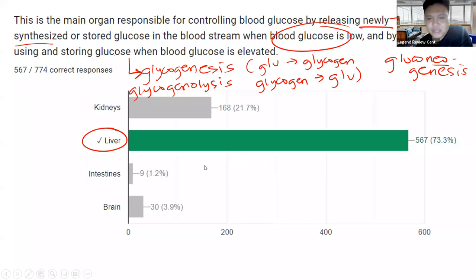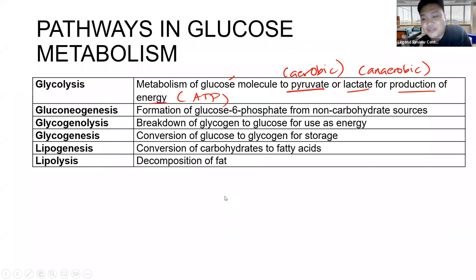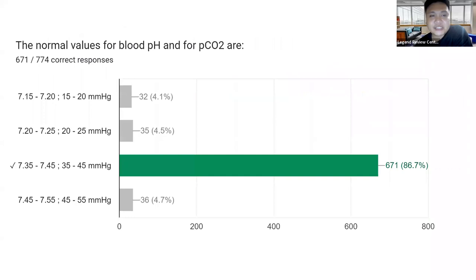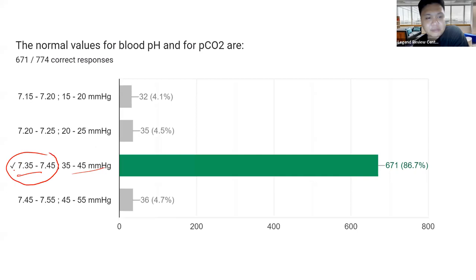For clinical chemistry, the favorite organ is the liver, while in clinical microscopy it's the kidneys. Next question — normal values: for blood pH it would be 7.35 to 7.45. For PCO2, it would be 35 to 45 mmHg. A handy way to remember this: if you know the pH, just drop the 7 and you get the normal value for PCO2 — 35 to 45.